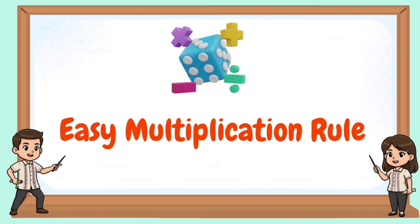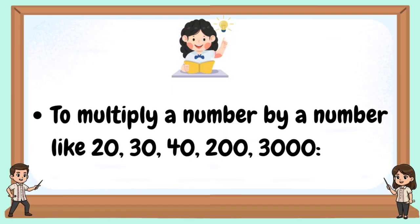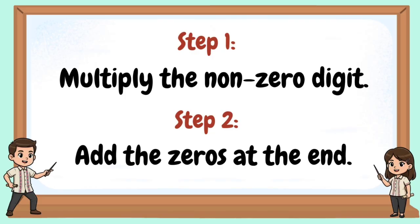Easy multiplication rule. To multiply a number by a number like 20, 30, 40, 200, and 3,000: Step 1 — Multiply the non-zero digits. Step 2 — Add the zeros at the end.